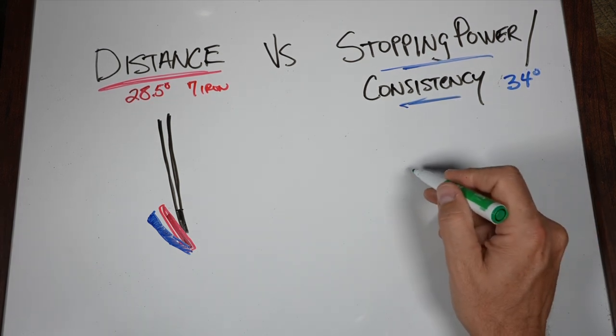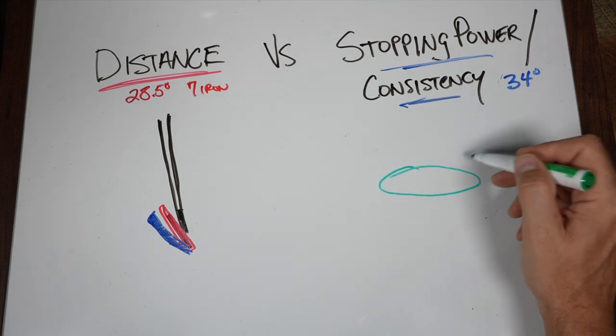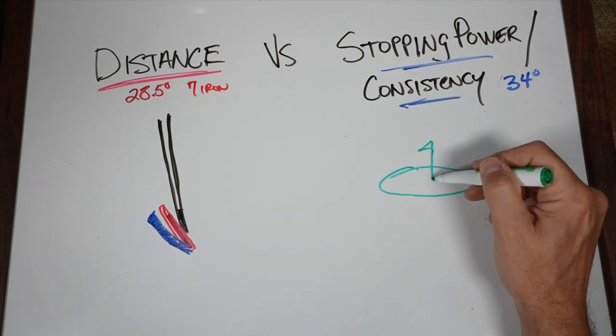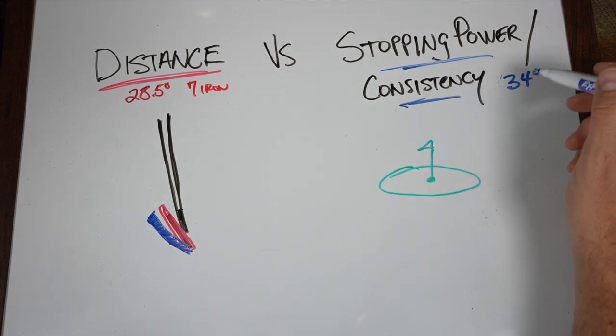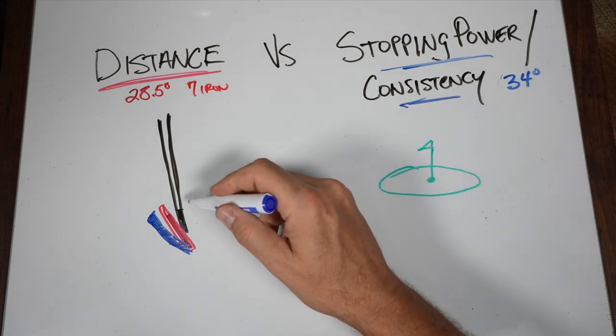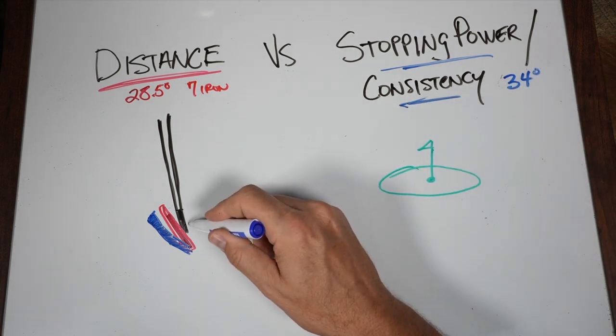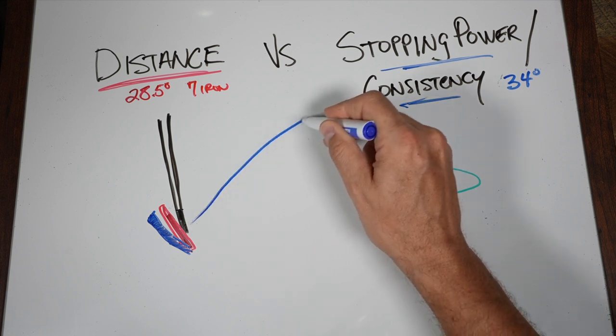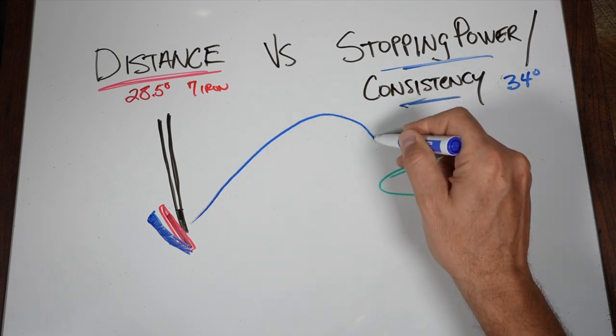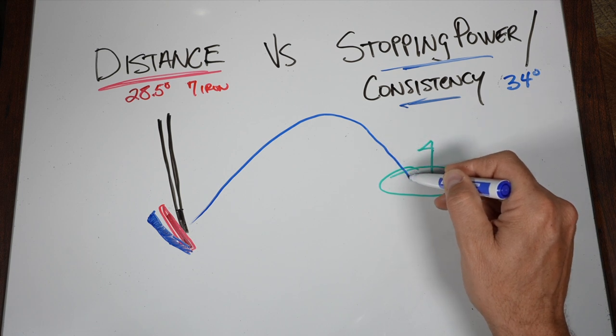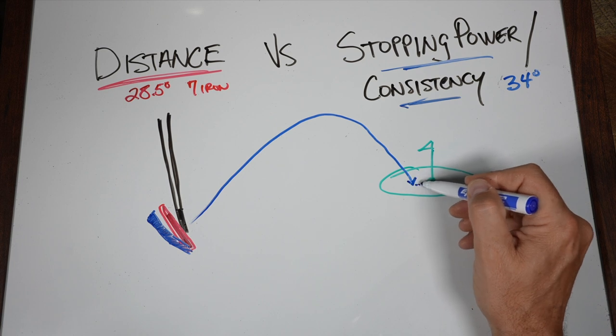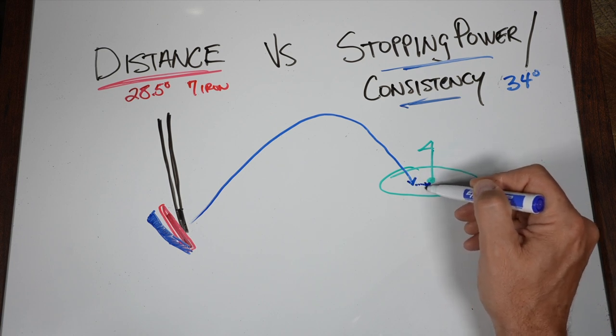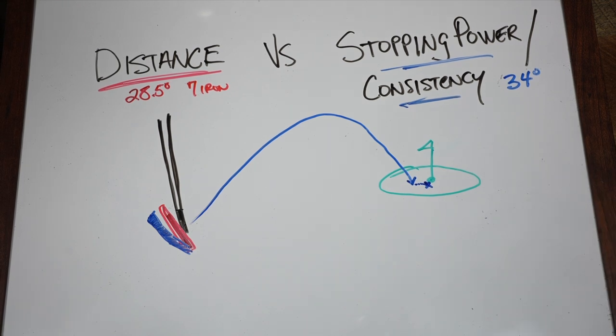What I'm going to do here is build our green. Here's our flagstick in the middle. When you hit that 7-iron at 34 degrees, you might hit a trajectory that looks something like this. It's nice and high, penetrating, and it's going to come down at this angle that's pretty steep. It's going to stop here on the green and move forward just a little bit and end right here near the hole, if it's a good shot of course.